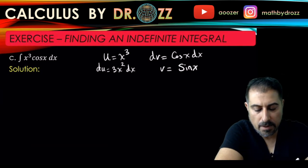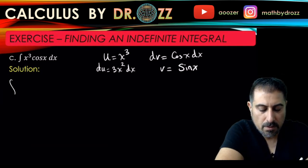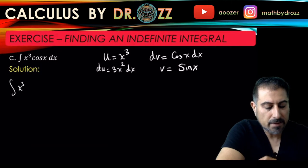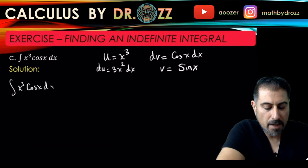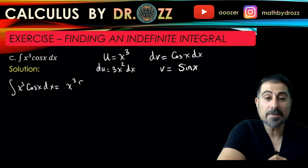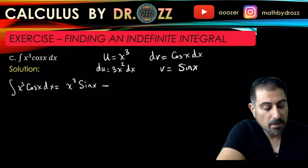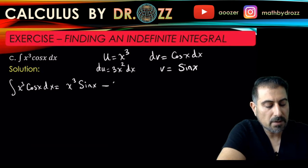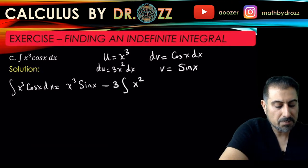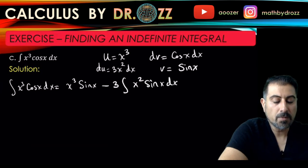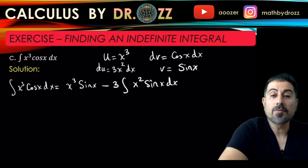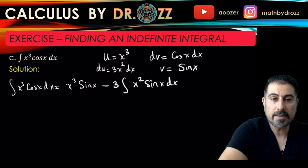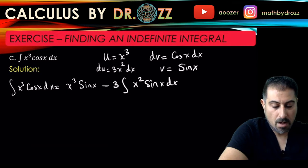I'm going to write x cubed cosine x dx as u times v. x cubed sine x minus v times du. du equals 3x squared, so v times du is in a simple form: 3 times x squared sine x dx.